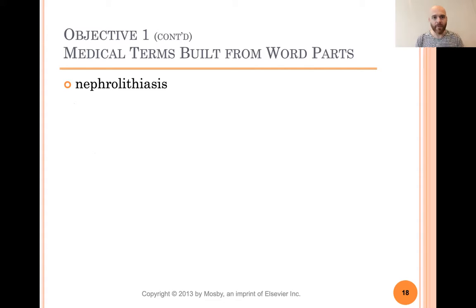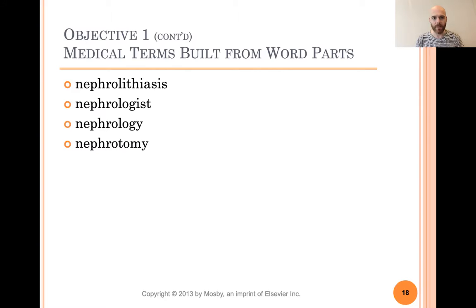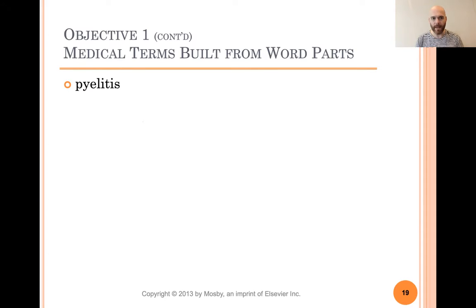Let's make some more words. Nephrolithiasis is the condition of stones in the kidney, or kidney stones. Nephrologist is a doctor that studies the kidneys. Nephrology is the act of studying the kidney. Nephrotomy is opening up the kidney — making an artificial opening. Nocturia — that was nighttime urination. Oliguria is just scanty urination. Pyelitis — remember, don't get pyel confused with py. Pyel means renal pelvis, so this is going to be inflammation of the renal pelvis.